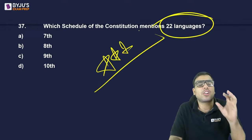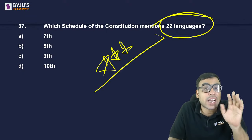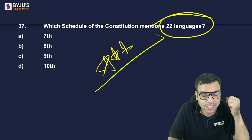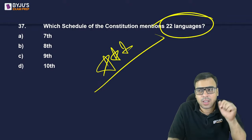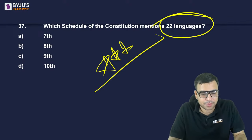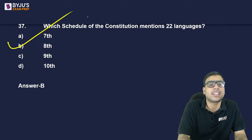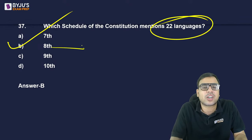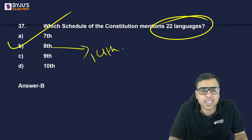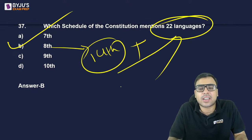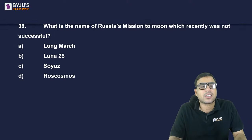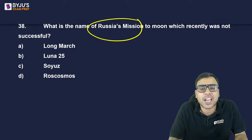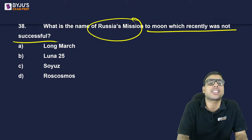In which Schedule of the Constitution are the 22 languages mentioned? 7th, 8th, 9th, or 10th? The right answer is the 8th Schedule. When the Constitution was originally made, there were 14 languages; more were added later. Currently there are 22 languages in the 8th Schedule.